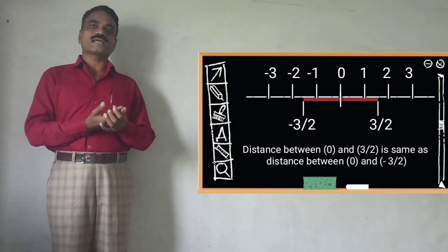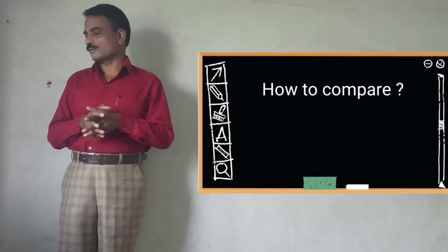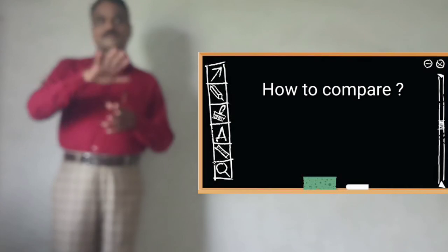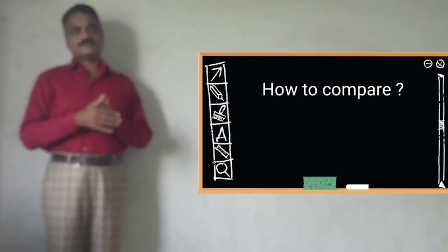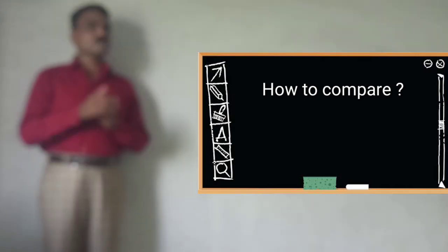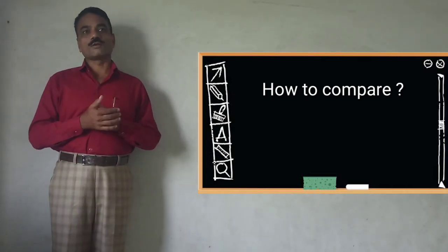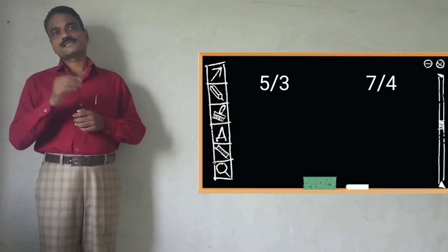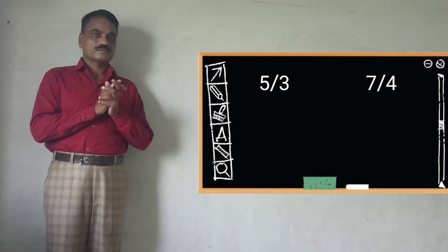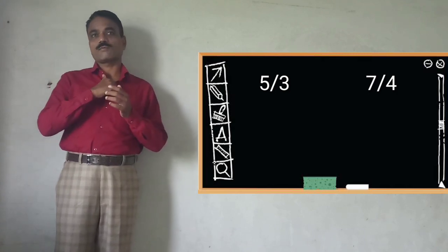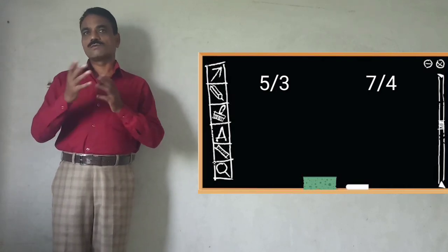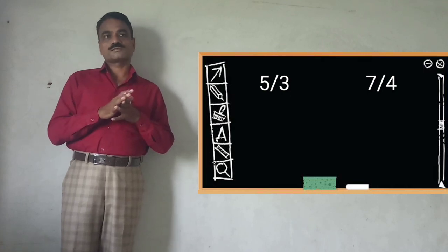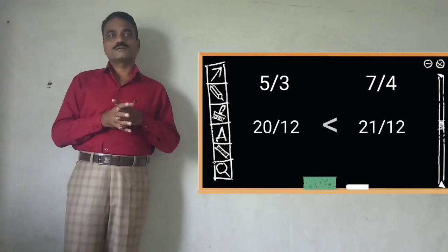Now, comparison of rational numbers. When we have to compare two rational numbers — for example, five upon three and seven upon four — we compare these two rational numbers. The first thing is to convert these numbers such that the denominators of the two numbers are equal, and after that compare the two numbers.